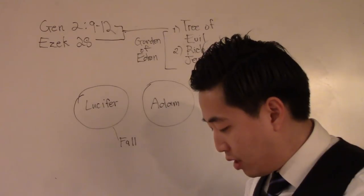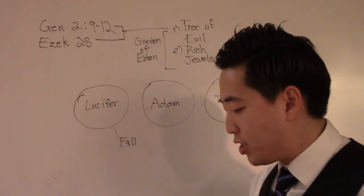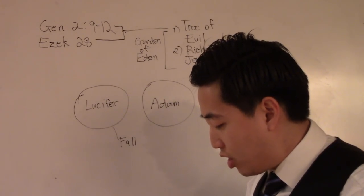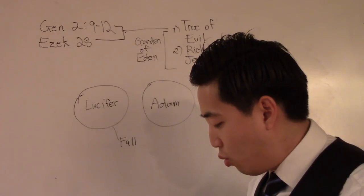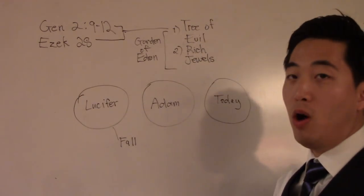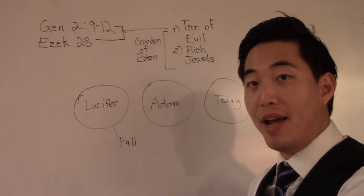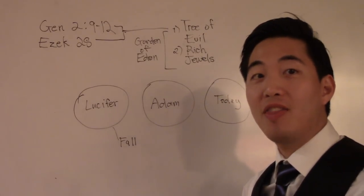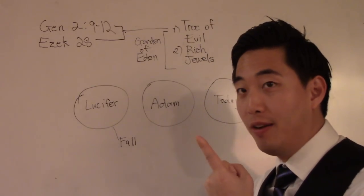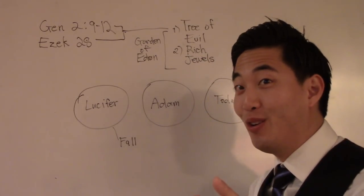Now look at Ezekiel chapter 31. We're going to look at verse 8. The cedars in the what? Garden of God cannot hide him. So it's talking about a specific tree in God's garden. Keep reading. The fir trees were not like his boughs, and the chestnut trees were not like his branches, nor what? Any tree in the garden of God was like unto who? Him in his beauty. Whoa. Remember Ezekiel 28? Thou art the anointed cherub, Satan, that was perfect in thy beauty. Thou hast been in Eden, the garden of God.